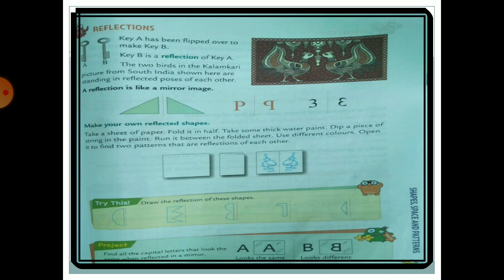Reflection is like a mirror image — when you look in a mirror you see the same image reflected back. Here you can see the reflection of a triangle, the letter B, and the number 3. Now make your own reflected shapes and see how the reflection looks.